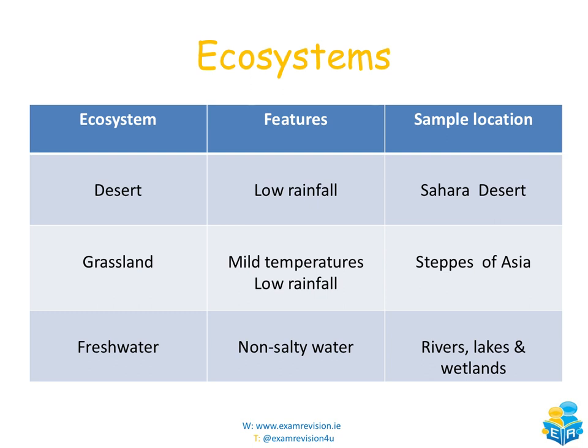Here are a couple of examples of ecosystems. The desert has very low rainfall — examples include the Sahara Desert and the Gobi Desert. Grasslands have mild temperatures and low rainfall; an example is the Steppes of Asia. A third ecosystem is freshwater ecosystems, which have non-salty water — rivers, lakes, and wetlands are examples of freshwater ecosystems.